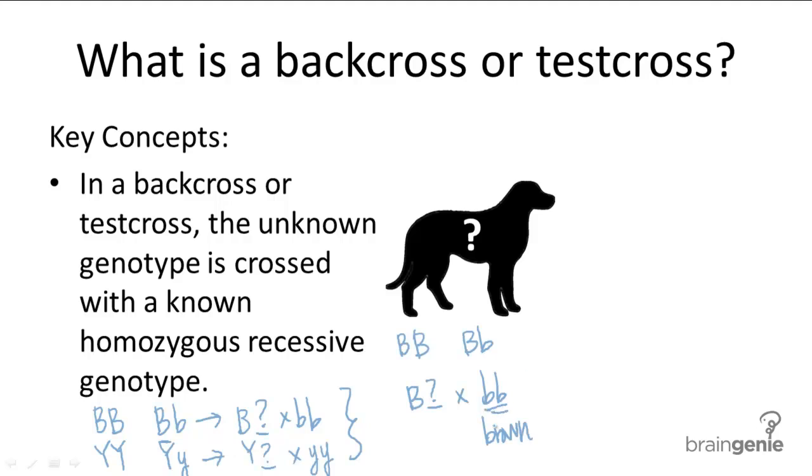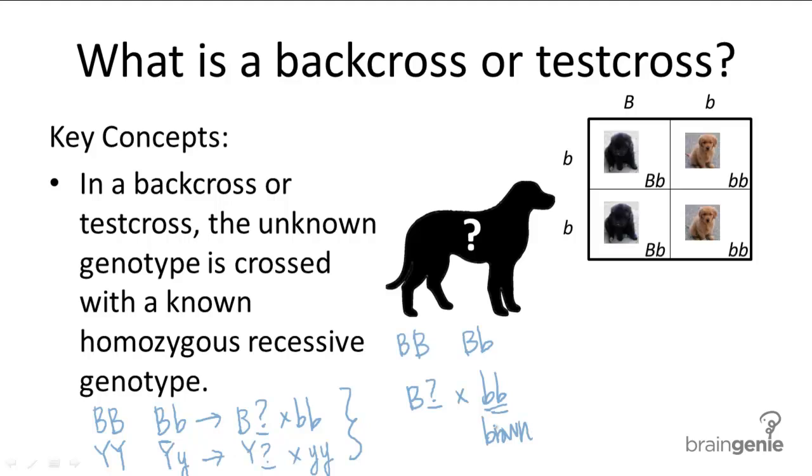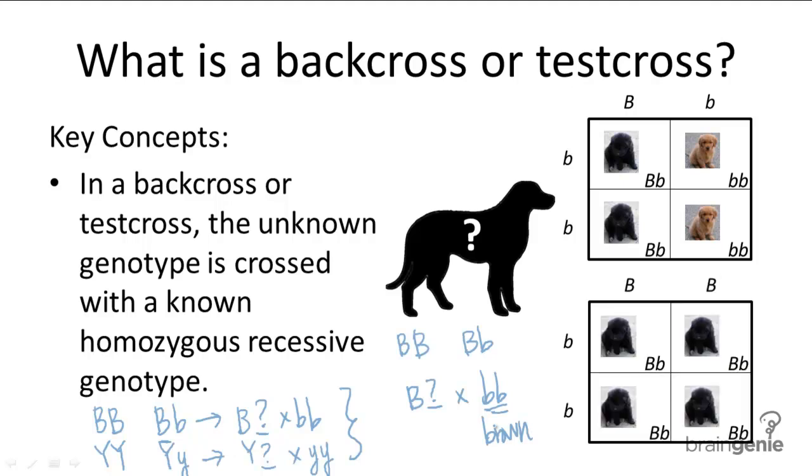The reason why this works is if the dog is heterozygous, there's a 50% chance that the offspring will have either black or brown fur. And if the dog is homozygous, all the offspring will have black fur.